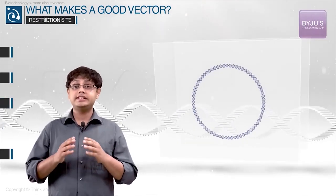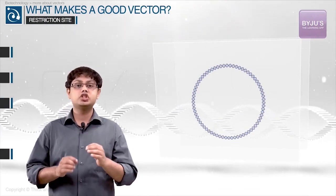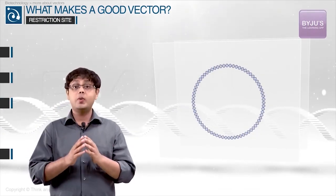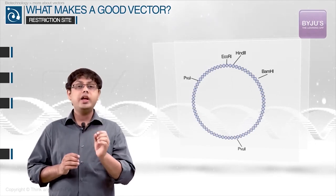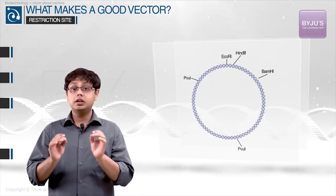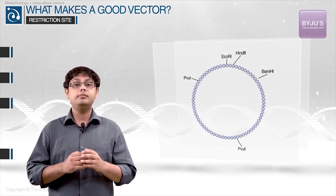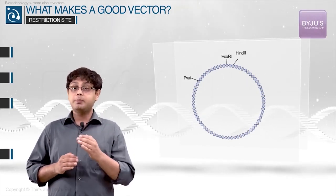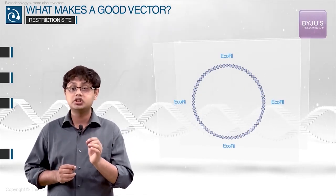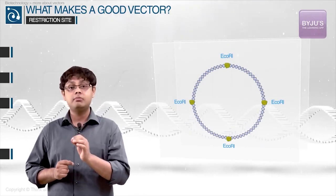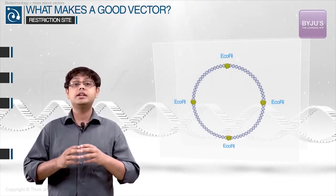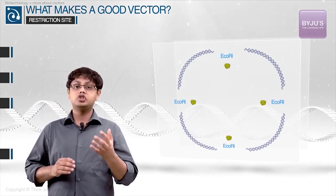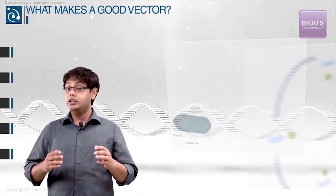So, these DNA sequences need to be present on a good vector. In fact, a good vector needs to have very few, preferably single, recognition sites for commonly used restriction enzymes. The presence of more than one restriction site for the same enzyme within the vector will generate several fragments, which will complicate gene cloning.